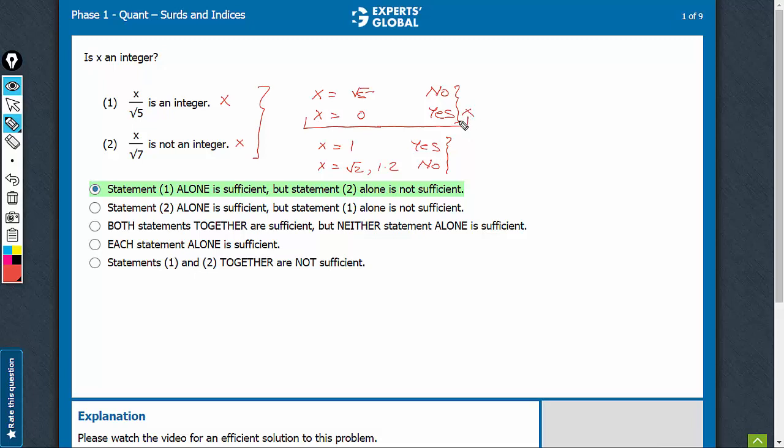Cases like 0 and 1, etc., will have to be eliminated. You will only get cases like x equals root 5 or 2 root 5, 3 root 5, something like that. So you will get only no as the answer, you will not get a yes. Therefore, on combining, we can say that x is not an integer.